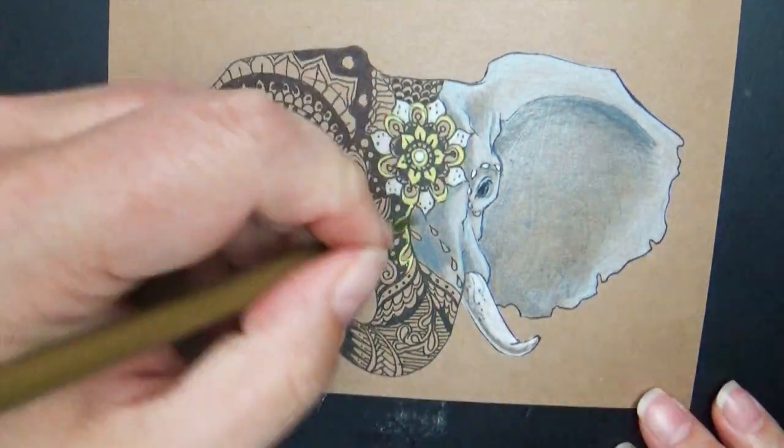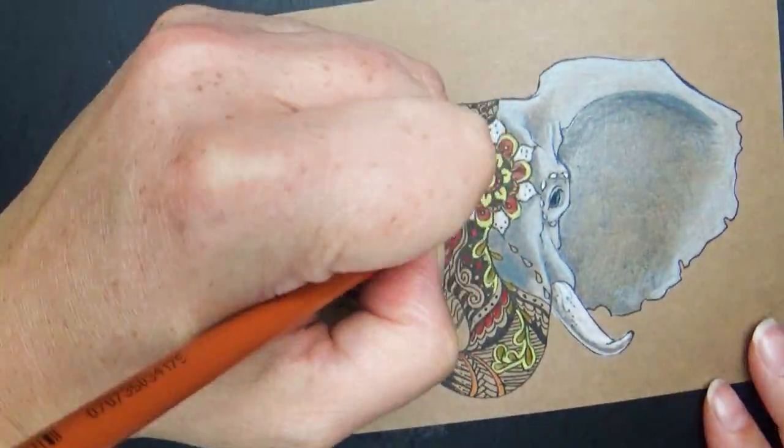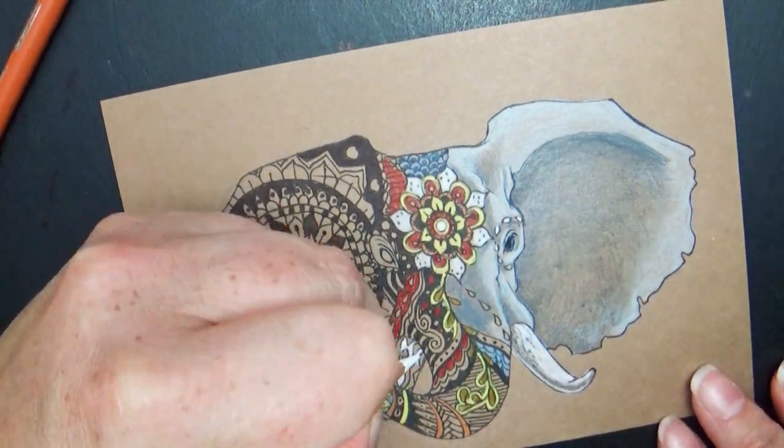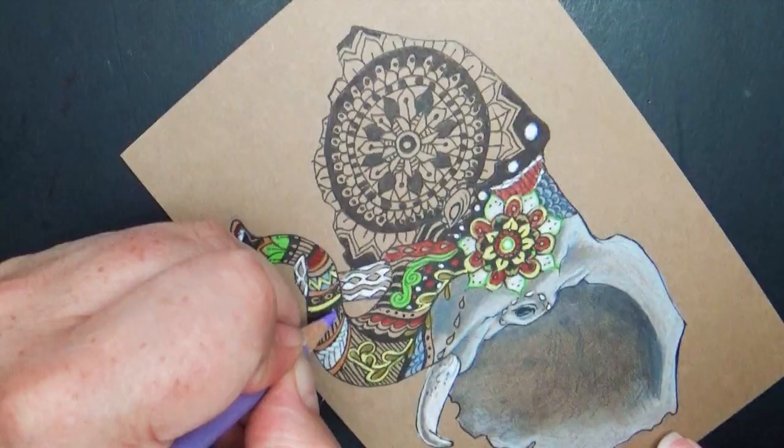And then of course adding in all the fun colors at the end was super fun. I tried to push in a little bit of shadows and highlights on the elephant itself and then ended up kind of putting a white border all the way around it and really really love how this elephant turned out.